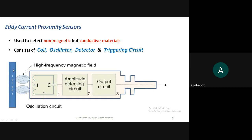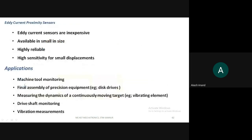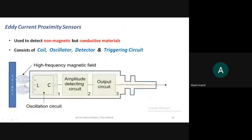To understand how it works, an eddy current proximity sensor consists of a coil, an oscillator, and a detector. These are the main components of an eddy current proximity sensor.